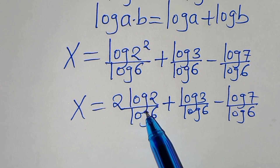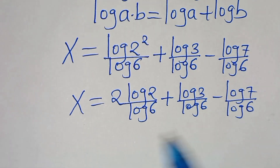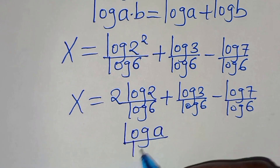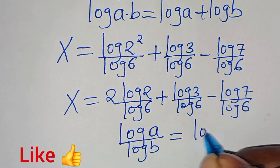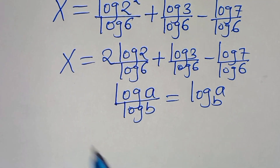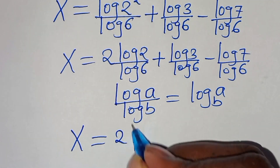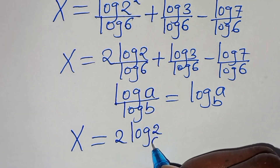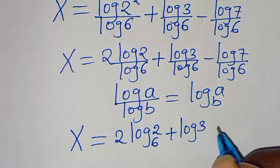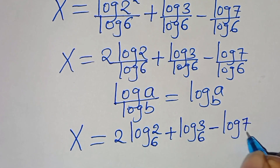Now each term — log 2 over log 6, log 3 over log 6, and log 7 over log 6 — is in the form of log a divided by log b, which we can express as log base b of a. Applying this change-of-base property, x is equal to 2·log base 6 of 2, plus log base 6 of 3, subtract log base 6 of 7.